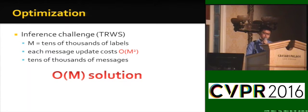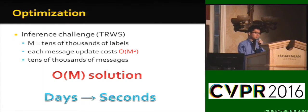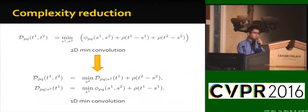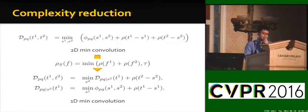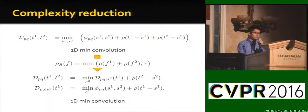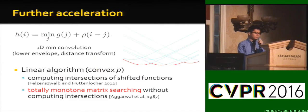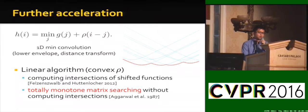We have a linear time solution. Notice that the key deduction is that 2D mean convolution can be decomposed. We make use of the assumption that the regular grid structure allows 1D mean convolution to be evaluated in linear time, giving 2D mean convolution a total complexity of O(M). This is related to the lower envelope or distance transform in other works.